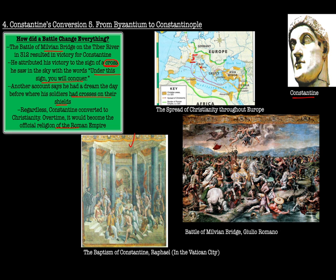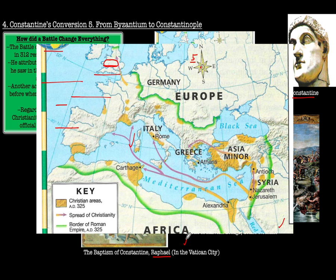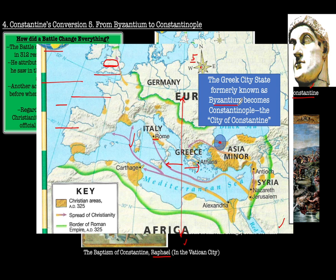Constantine also took a couple of other major actions to help stave off the collapse of Rome. Diocletian had more or less decided to split the empire into two — the western half and the eastern half. Constantine also decided to move most of the capital's activities from Rome to the Straits of Bosporus, to a Greek city-state formerly known as Byzantium, which became Constantinople — the city of Constantine. This became the most prosperous location in the entire Roman Empire. When Rome fell and western Europe collapsed, Constantinople thrived for another thousand years under the Byzantine Empire, which is our next section to study.